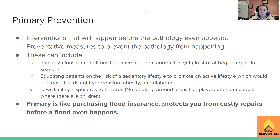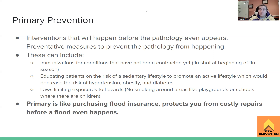Primary prevention also includes educating at-risk patients on the risks of a sedentary lifestyle and promoting an active lifestyle to decrease the risk of pathology. They don't have these pathologies yet, but these measures decrease the risk. For example, patients at risk for diabetes — educating them to be healthier with their lifestyle, or offering treatment for eating disorders so they don't lead to pathologies like diabetes or obesity.